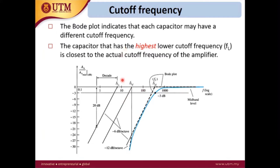In the Bode plot, after you draw the axes, the x-axis should be in log scale for frequency, and the y-axis is gain in linear scale. In the frequency axis, you can label every frequency. For example, in the previous example we calculated three cutoff frequencies from three capacitors, so we label these three frequency values on the frequency axis.